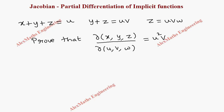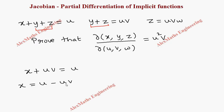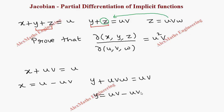In place of y + z we substitute uv, so x + uv = u, giving x = u - uv. Now we need y in terms of u, v, w. In place of z we substitute uvw, so y + uvw = uv, giving y = uv - uvw. So we have x, y, and z all expressed in terms of u, v, and w.